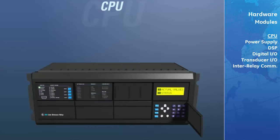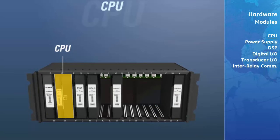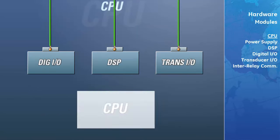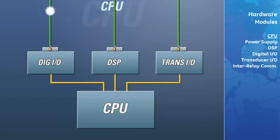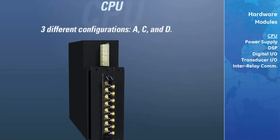The central processing unit, or CPU module, is the brain of the entire UR. The CPU can always be found in slot D of the chassis. All other modules accept information from the outside world and forward it to the CPU module, which performs all calculations needed to protect power system devices and then sends commands back to the other modules if required. The UR CPU is offered in one of three different communications configurations: A, C, and D.